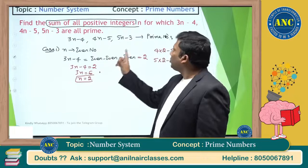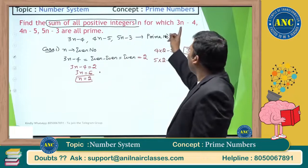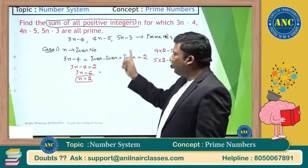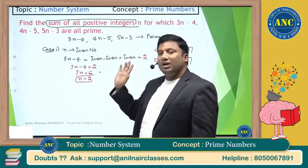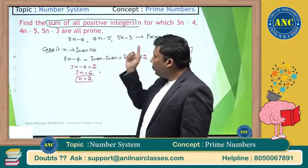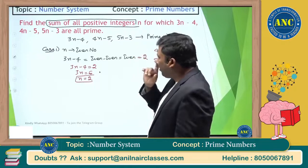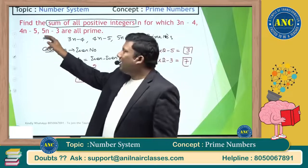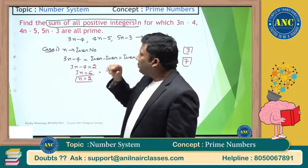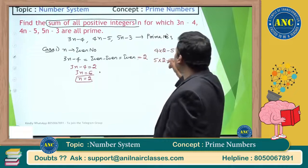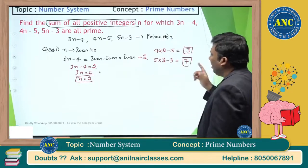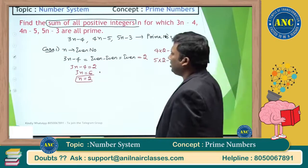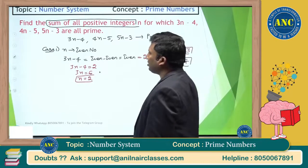So n equals 2 gives us: 3(2) minus 4 = 2 (prime), 4n minus 5 = 8 minus 5 = 3 (prime), 5(2) minus 3 = 7 (prime). All three are prime.